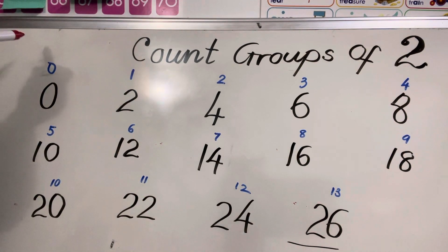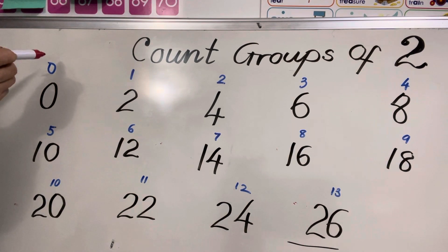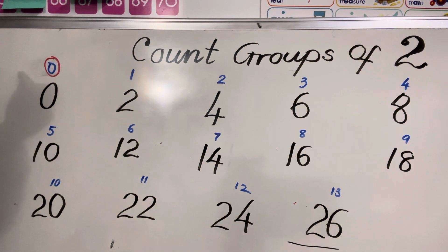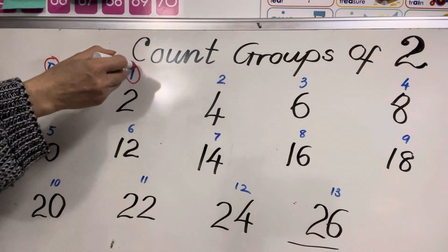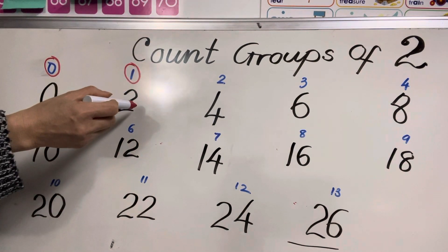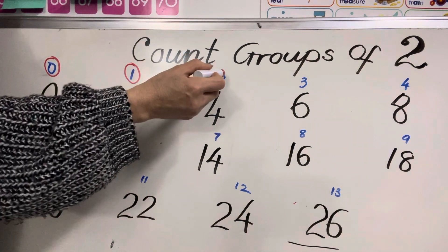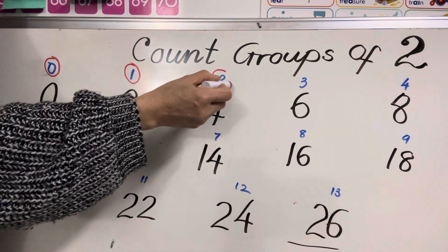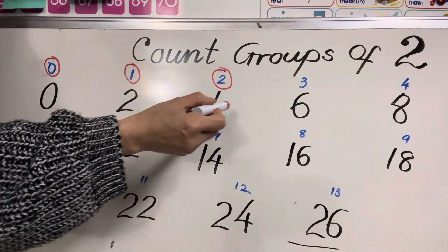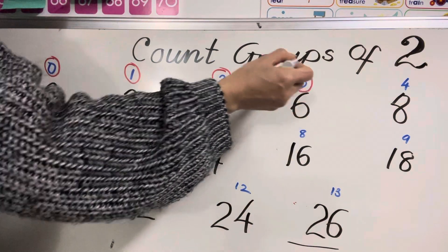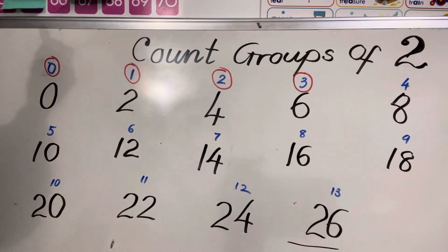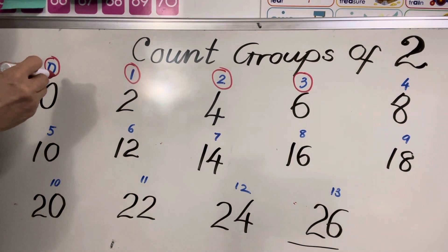0 groups of 2 is 0. 1 group of 2 is 2. 2 groups of 2 is 4. 3 groups of 2 — you count, look how you count the group, let's see.